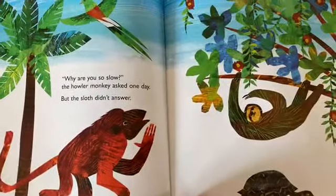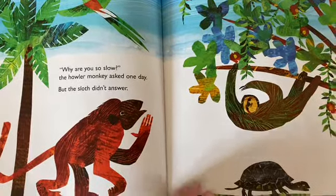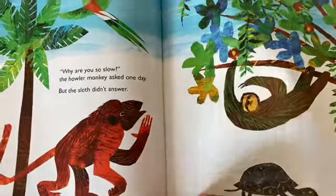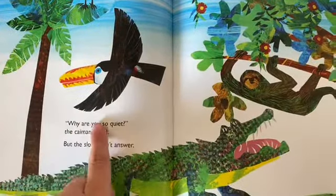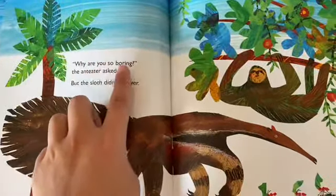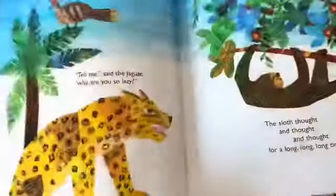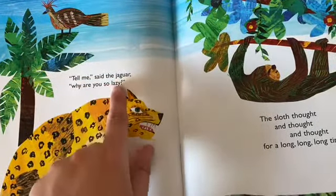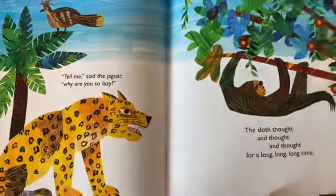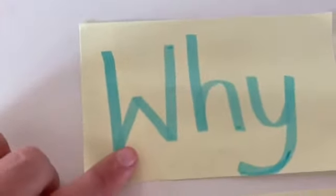Lots of the animals in the story ask the sloth a question. Why are you so slow? Why are you so quiet? Why are you so boring? Why are you so lazy? All of the questions in the story use the why question word. But there are lots of other words that we use at the start of a question to let people know that we are wanting an answer.